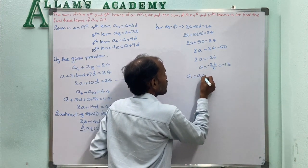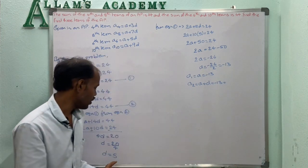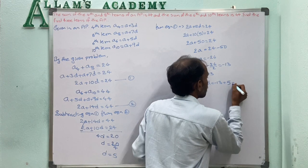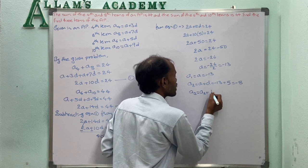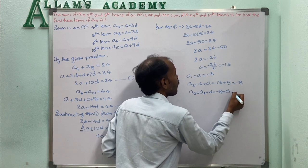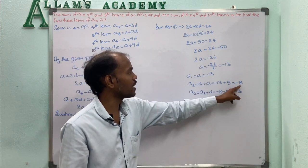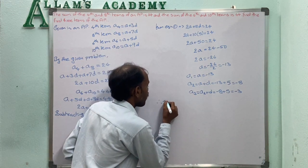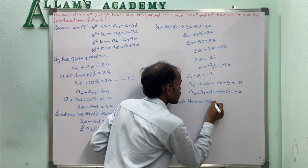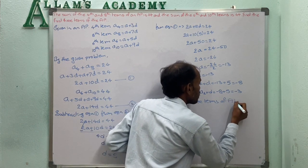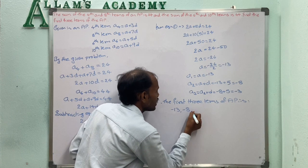The second term A2 = A + D = -13 + 5 = -8. The third term A3 = A2 + D = -8 + 5 = -3. Therefore, the first three terms of the AP are -13, -8, -3.